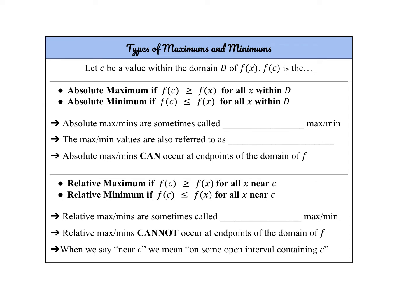Just some vocabulary to be aware of: sometimes absolute maxes and mins are called global maxes or mins, which makes sense because globally means the absolute highest or lowest. The max and minimum values can also be referred to as extreme values, or extrema for the plural version. It is really important to note that absolute maxes and mins can occur at endpoints within a domain.